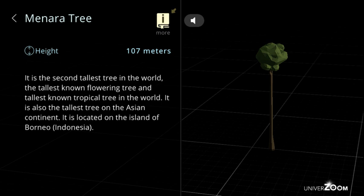Menara tree, height: 107 meters. It is the second tallest tree in the world, the tallest known flowering tree and tallest known tropical tree in the world. It is also the tallest tree on the Asian continent. It is located on the island of Borneo, Indonesia.